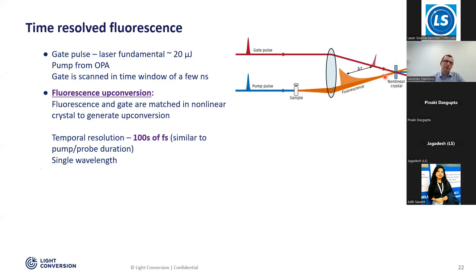To generate the upconversion signal, you block the fluorescence, you block the gate pulse, and you additionally use a prism to filter out this wavelength, and then you detect it with the detector.